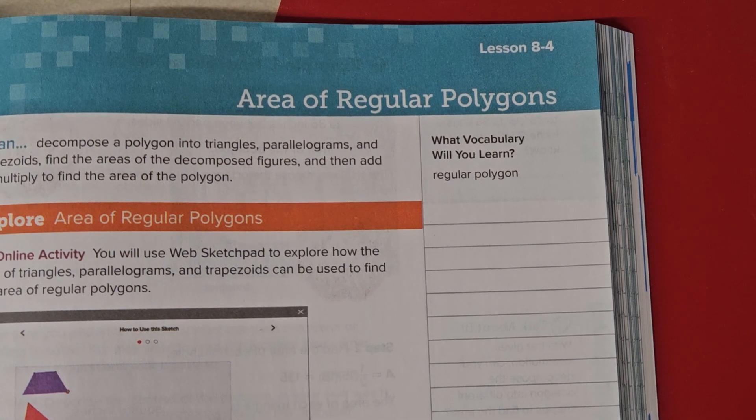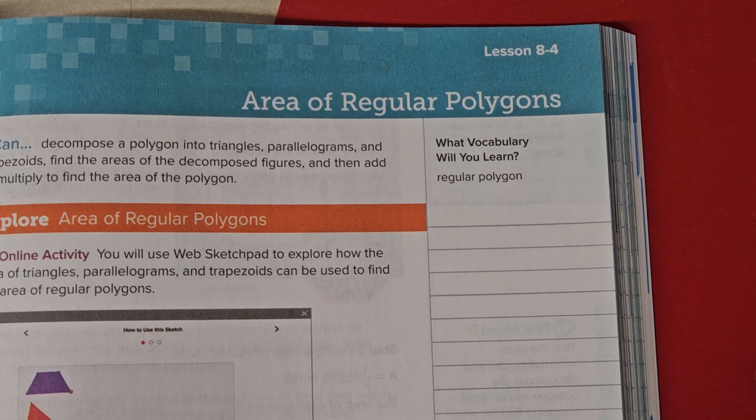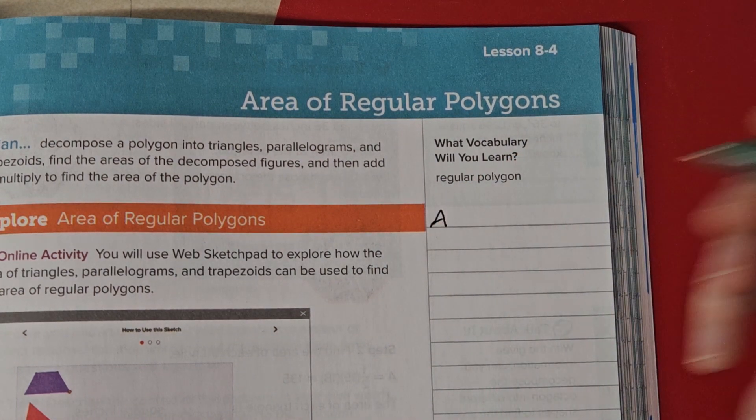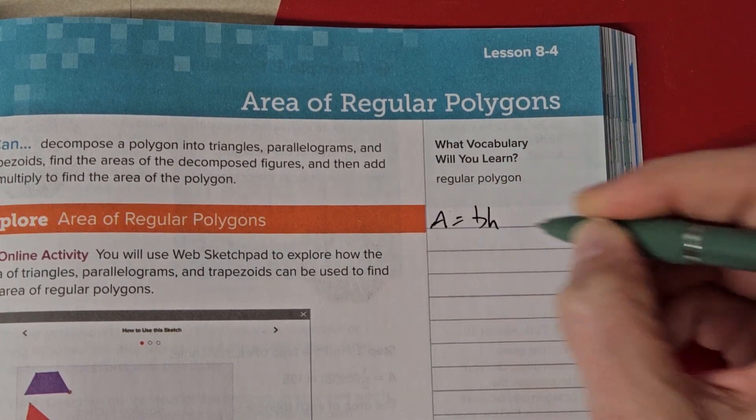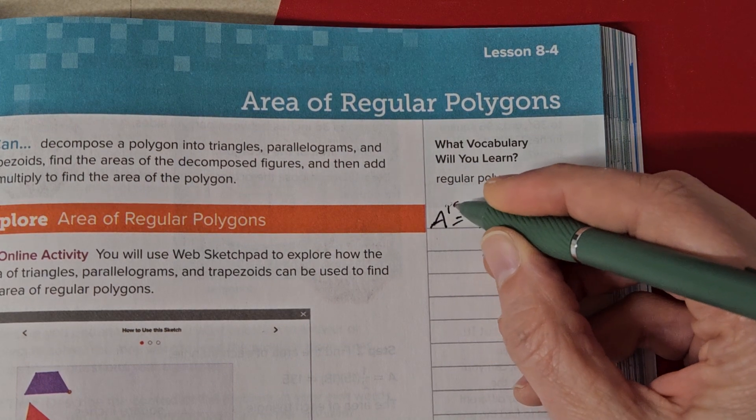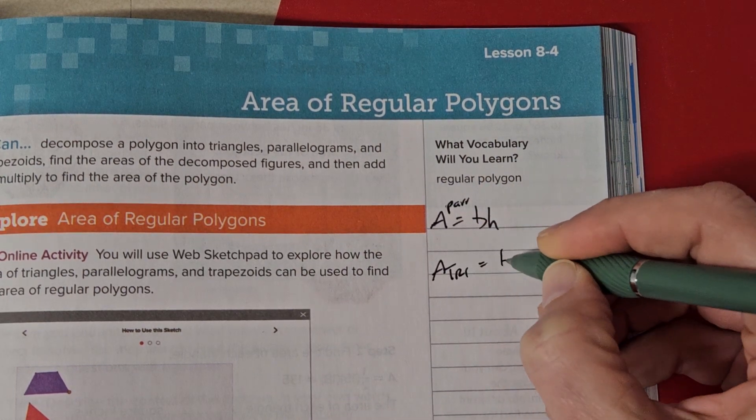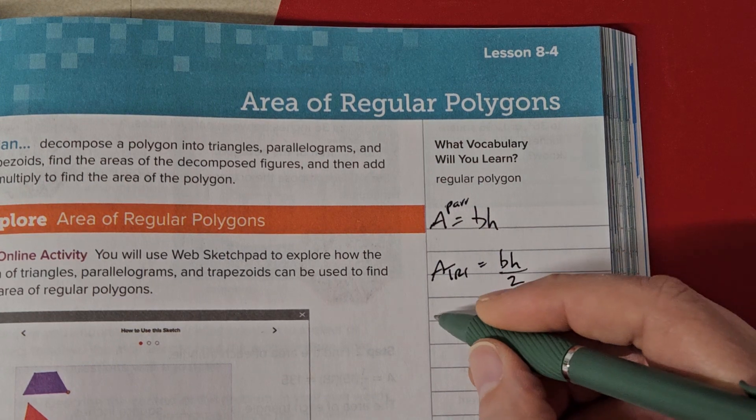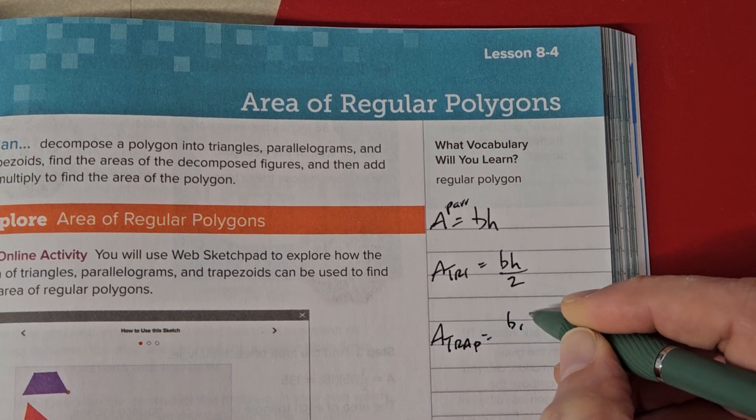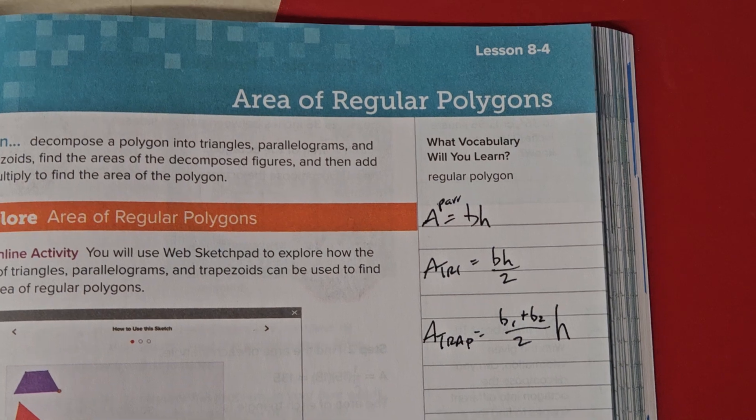Good morning. Lesson 8-4, Area of Regular Polygons. We've done a lot of area, right? So we did the area of a rectangle and the area of a parallelogram, both equal to base times height. We did the area of a triangle: base times height divided by 2. Previous lesson we learned area of a trapezoid was base 1 plus base 2, divided by 2, times the height. And now we're going to find the area of regular polygons.